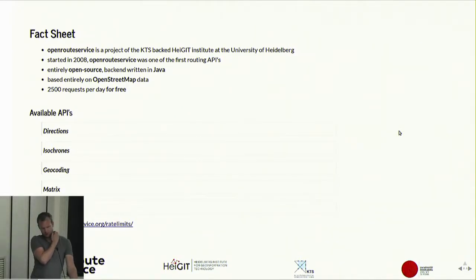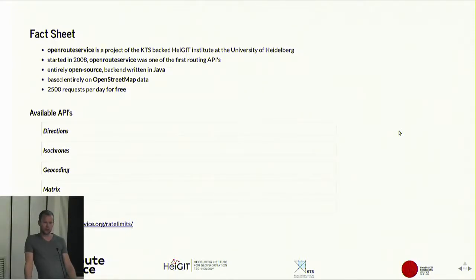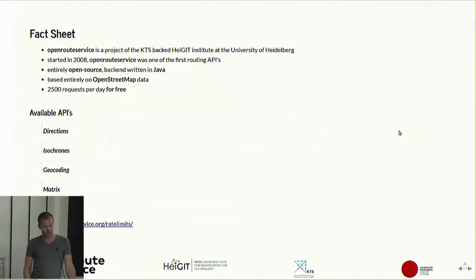The matrix endpoint doesn't return geometry — it's really a precursor for routing optimization. You can put an optimization engine on top and solve the travelling salesman problem, just like Vroom did. We also have a POI endpoint where you give any geometry and query around or within it for points of interest from the OSM database. You can see more on the rate limits side if you want to check it out.